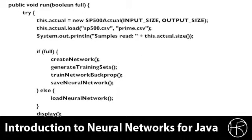Here you see the run method. This run method is called by the main method, and a boolean is passed in to specify if we are doing full training or not. You can see that we create a new S&P 500 actual object. This we're going to look at in the next class part when we see how the program actually generates the actual data, and we load the S&P 500 from the CSV file and the prime rate from another CSV file. We display the number of samples read.